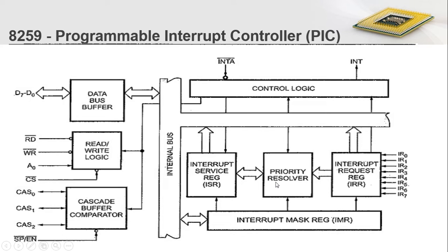Then the priority resolver comes into action. It works on the stored interrupt requests and extracts the highest priority interrupt request. The interrupt request with the higher priority is extracted from among the various requests, and its information is passed to the interrupt service register. At the same time, the control logic generates an interrupt request to the processor.